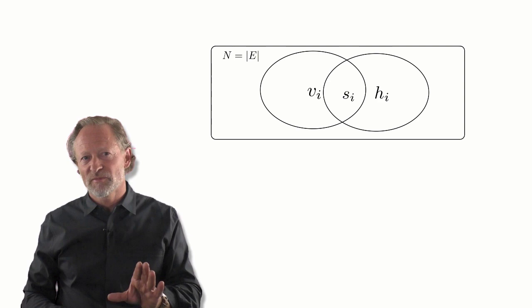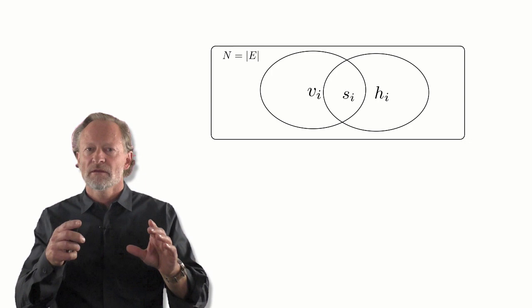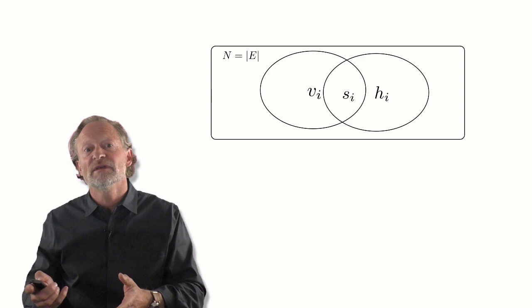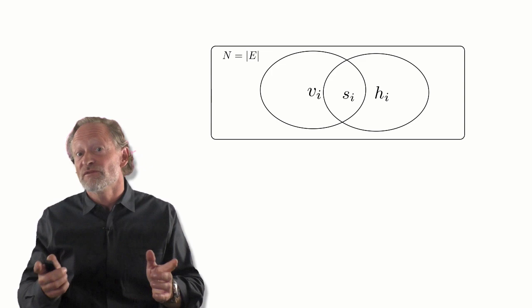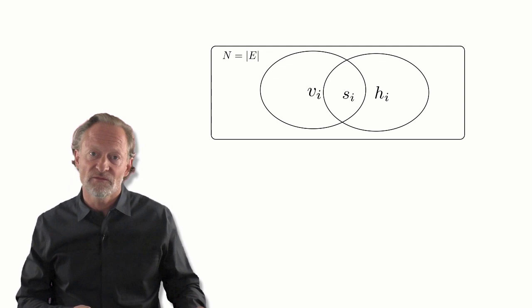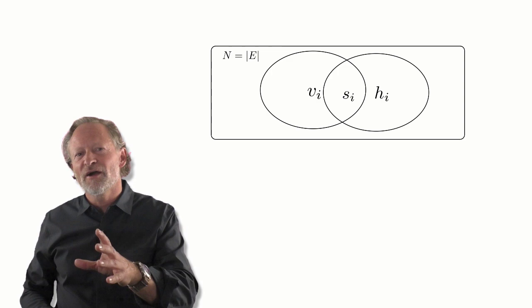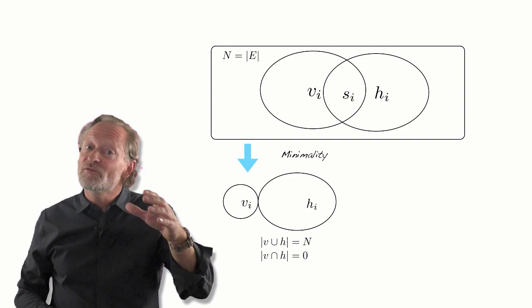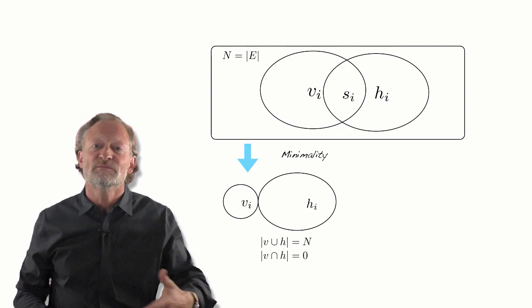We can interpret this experiment using a Venn diagram: one set is the viral genome, V, and another set is the environment, H, the host. The intersection of these two sets are genes shared by the virus and the host — the virus minimizes itself. What Spiegelman discovered is that if you make the environment certain, the virus minimizes itself — it throws away all genes it doesn't need because they're already there. This is minimality.